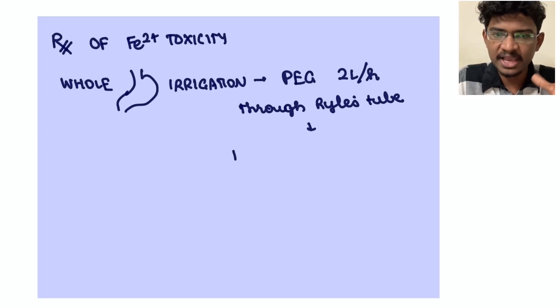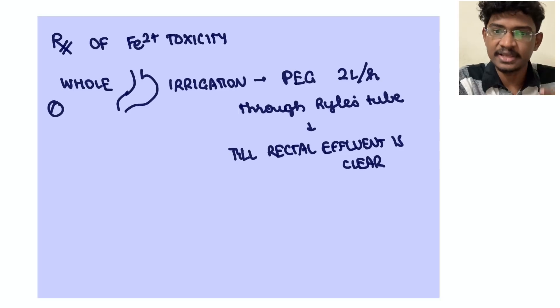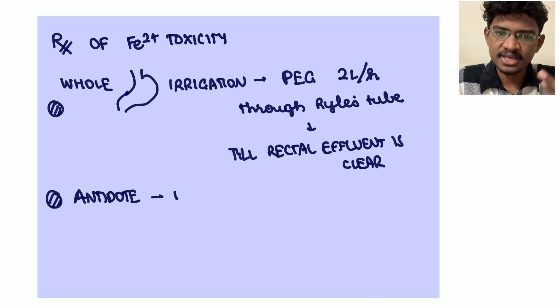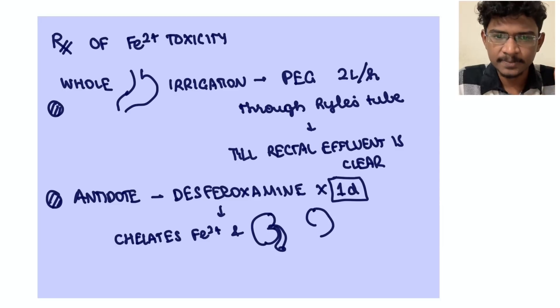Next is what you can do is whole bowel irrigation. They give PEG, polyethylene glycol, which will absorb iron and will be excreted in stools. This should be given until the rectal effluent becomes completely clear. This is one method. Next is the antidote of choice in iron toxicity is desferoxamine, 15 mg per kg. We'll give actually for one day.